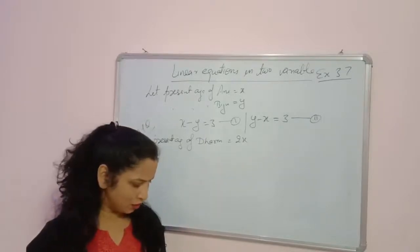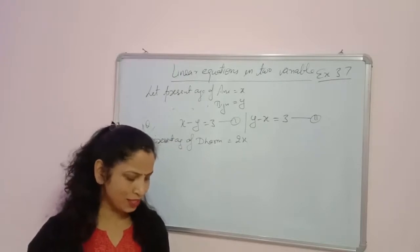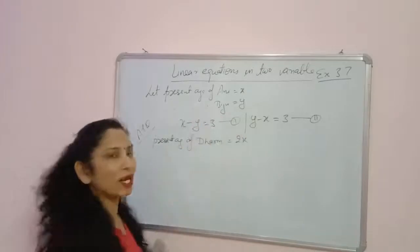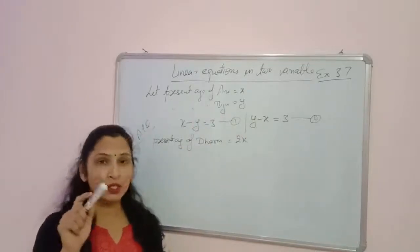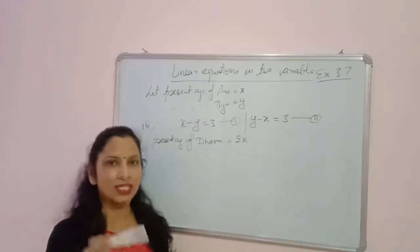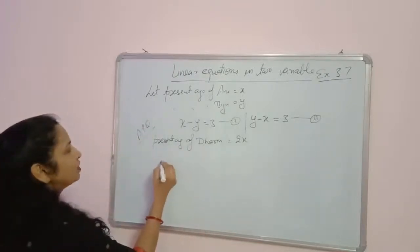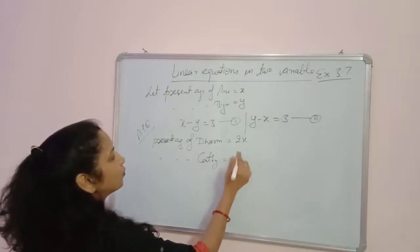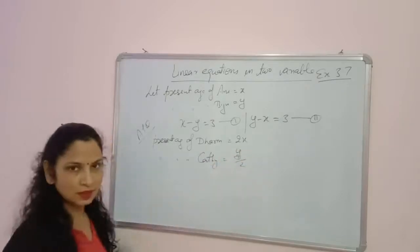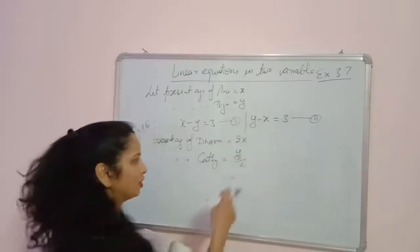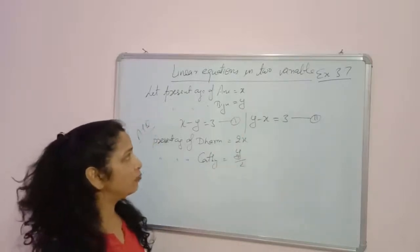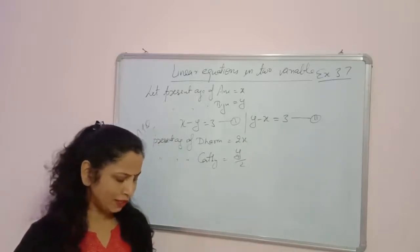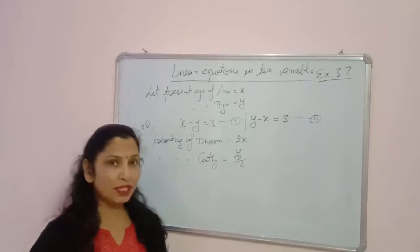Next: Biju is twice as old as his sister Kathy. So Kathy's age should be half of Biju's. We say the present age of Kathy equals y/2. Since Biju's age is y, Kathy's age will be y/2. Now, the ages of Kathy and Dharam differ by 30 years.